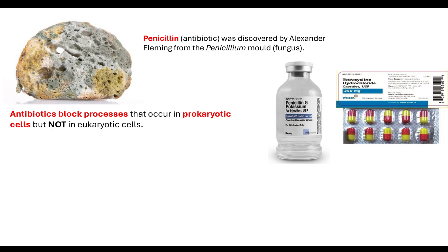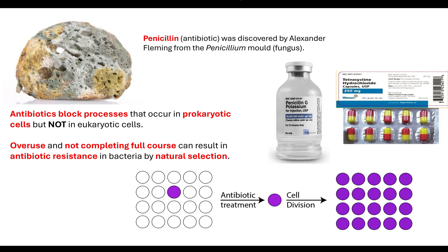When Alexander Fleming discovered penicillin, it soon became a widely prescribed drug to help prevent some communicable diseases. But we have a problem: through the overuse and overprescription of antibiotics, and from patients starting to feel better and not completing a full course, this resulted in antibiotic resistance within bacterial cells. Thinking back to natural selection, we know that mutations occur in genetic information completely by chance.